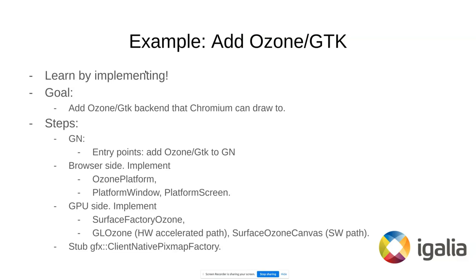On the browser side we need to implement the OzonePlatform — this is basically the main interface we have in Ozone. Also the PlatformWindow, which is for the native window, and the PlatformScreen, which represents the physical screen. It combines the displays you have so that the client knows where it's going to put a newly created window, so it can adjust bounds accordingly and translate them from DIPs to pixels if you have a scale factor set to something more than one.